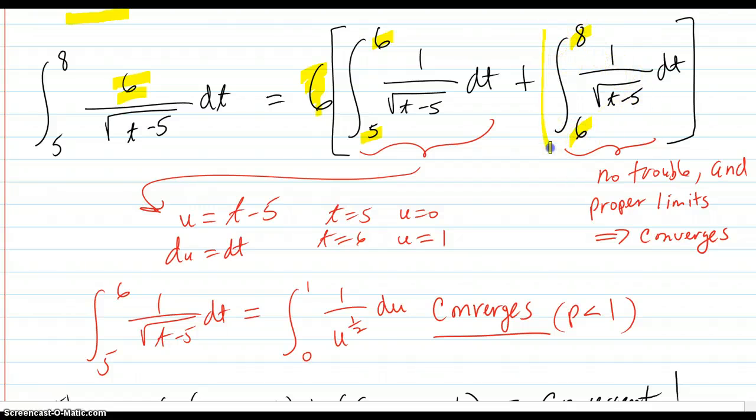Now over here, on this part here, there's no trouble at all. There's no undefined spots. You're beyond where the trouble is. So there's proper limits. There's nothing improper about this. This is just going to add up to some finite number. So that's going to converge.